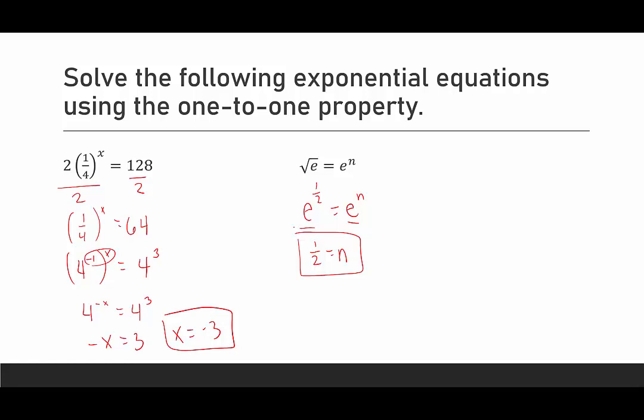These have been examples of looking at the one-to-one property. You'll notice with all of these that it was always possible to rewrite both sides to have the same base. That won't always be the case. So in the next video, you're going to look at applying other techniques. Actually, in the next two videos, you're going to look at applying other techniques that you can use when you can't rewrite both sides to have the same base. Thank you for stopping by.